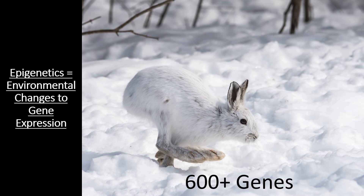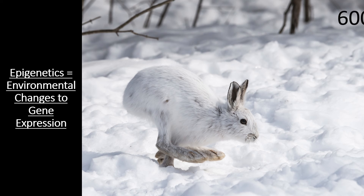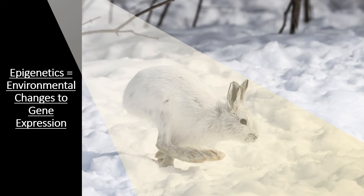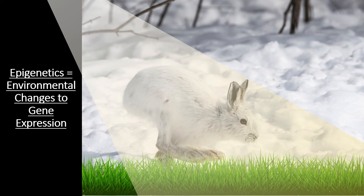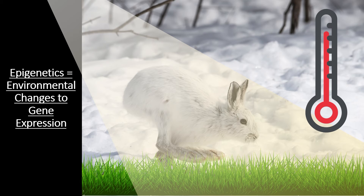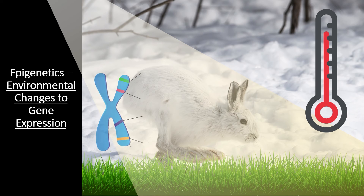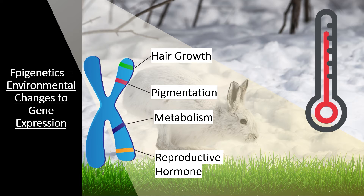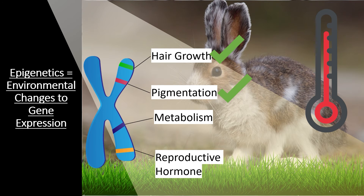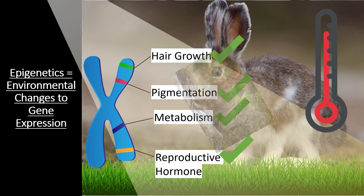As springtime starts to replace winter weather, several environmental cues hit the rabbit: more sunlight, more nutritious food sprouting, and rising temperatures. These environmental changes stimulate a number of signal transduction pathways that lead to changes in the expression of a large number of genes. For example, genes related to hair growth are turned on, as are genes related to the production of pigment molecules, leading to the molting phase. It also affects genes related to metabolism and the release of hormones that trigger the reproductive cycle, ultimately producing the summer phenotype.